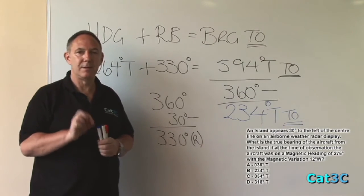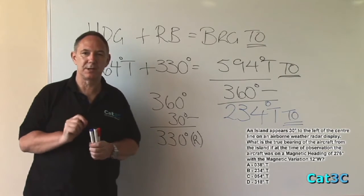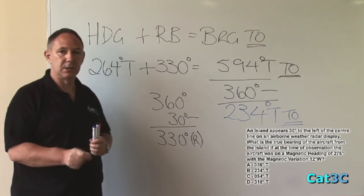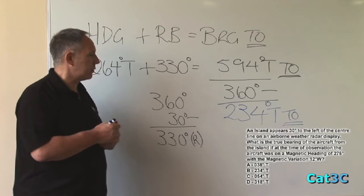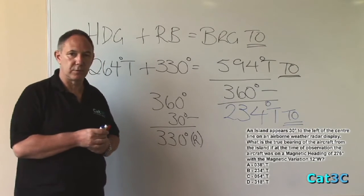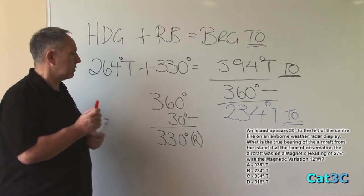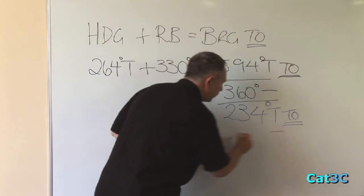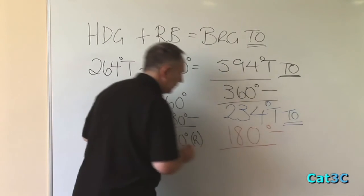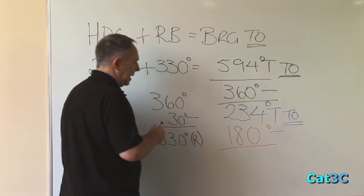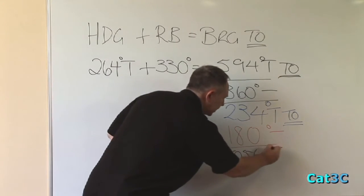What we are being asked for is the bearing from the island to the aircraft. In order to find this, we simply take the reciprocal of 234 degrees true, also known as the back bearing. And in order to do that, we simply subtract 180 from 234, which is going to give us a final answer of 054 degrees true from the island to the aircraft.